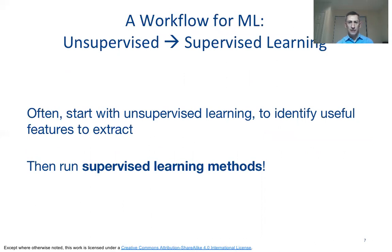Let's talk about what a typical machine learning workflow looks like. We often start with unsupervised machine learning to identify useful features to extract from our available data. For example, we may have a problem with many features but not as many data points. In that case, it's very important to extract only the most important features for our supervised machine learning problem. We may run procedures like principal component analysis. Once we have that data available, we will go ahead and train a supervised learning model.